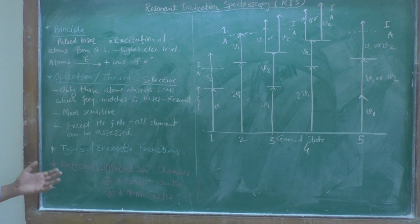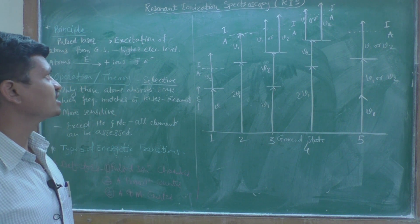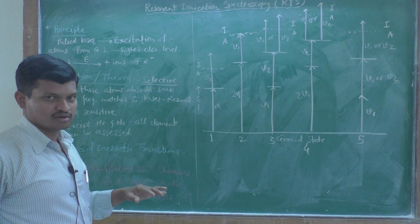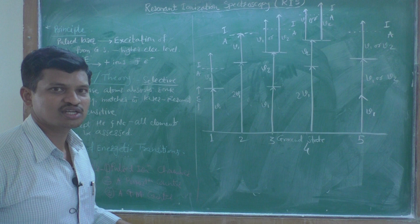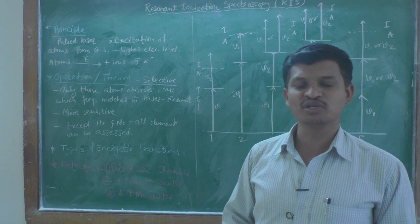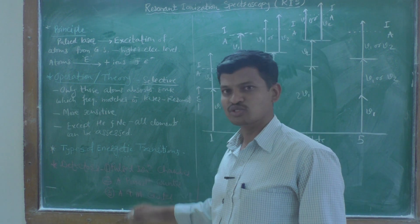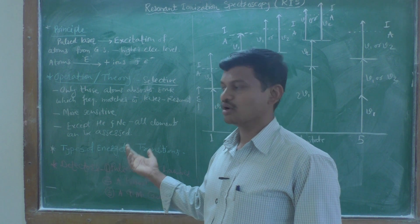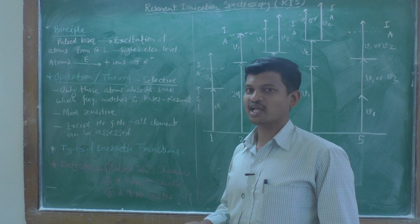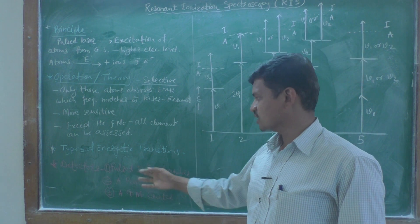Regarding the detectors used in RIS — resonant ionization spectroscopy — the first is a pulsed ion chamber, the second is a proportional counter, and the third is a Geiger-Müller (GM) counter. Note that the proportional counter and GM counter are also used for counting nuclear radiations. The same detectors can be used in resonant ionization spectroscopy.